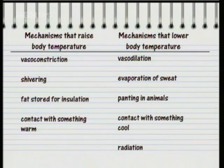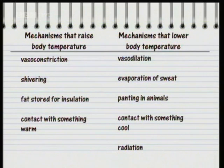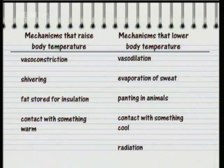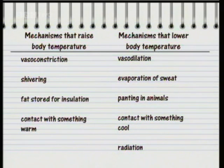Mechanisms that lower the body temperature include vasodilation, where the blood vessels near the skin surface dilate to increase the flow of blood and loss of heat from the blood. The evaporation of sweat, which causes cooling. Panting in animals, which causes cooling by increasing evaporation from the tongue. Loss of heat by contact with something cool, and natural heat radiation from the whole body surface.